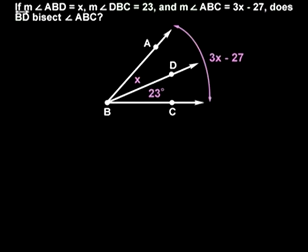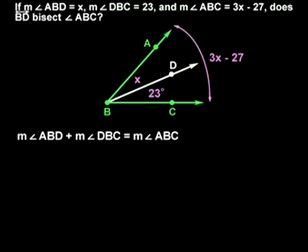Remember that the angle addition postulate tells us that the measure of angle ABD plus the measure of angle DBC equals the measure of angle ABC.